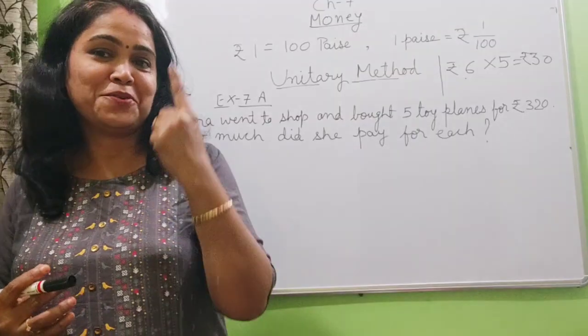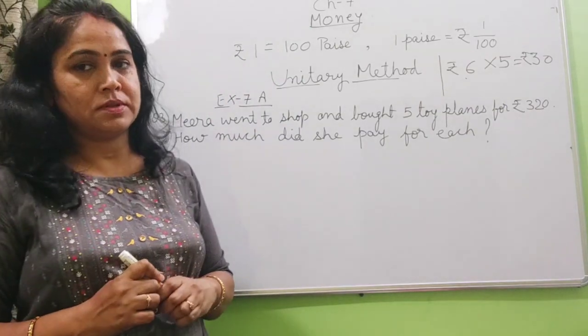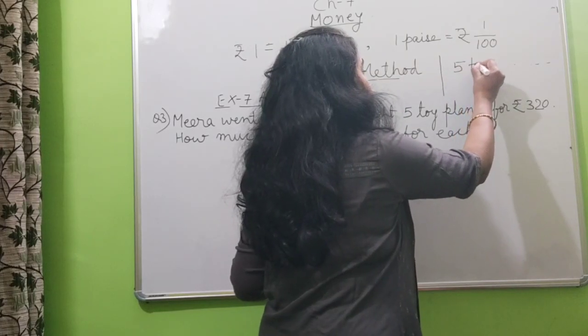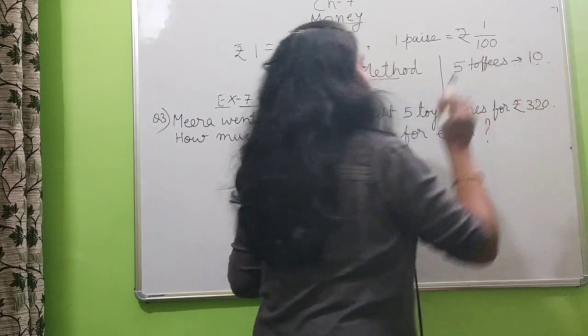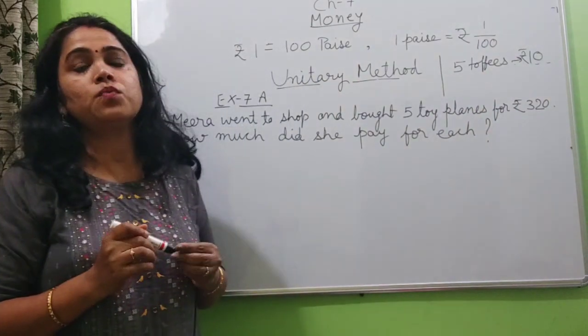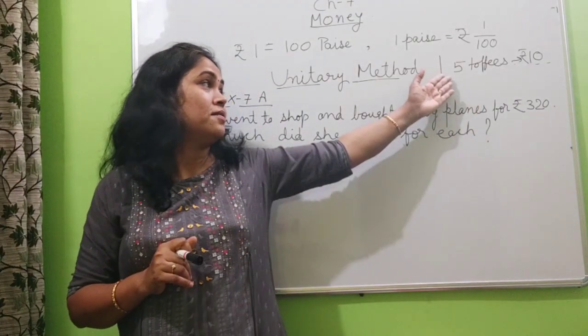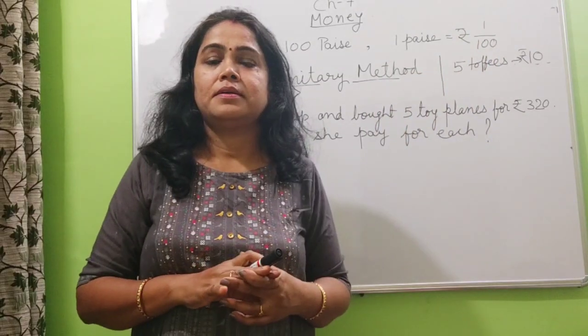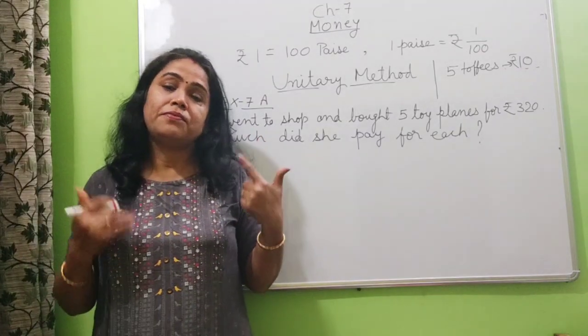Now suppose you have to buy 1 toffee and you went to the shop and the shopkeeper said that cost of 5 toffees is 10 rupees. What is the cost of 5 toffees? 10 rupees. If you want 1, you give me money and take the toffee. So how much will you give? 5 times or 10 divided by 5?